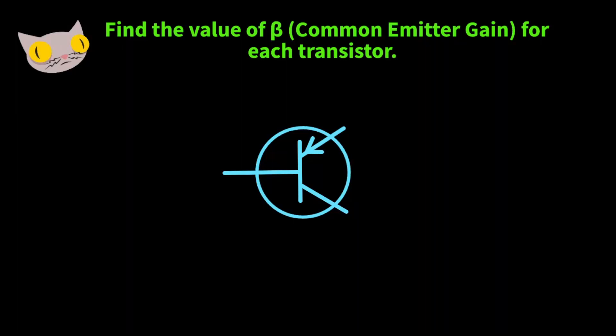Today we're going to learn how to find the common emitter gain, or beta, for a transistor circuit. We're going to go over three quick examples, but first let's look at the transistor symbol.